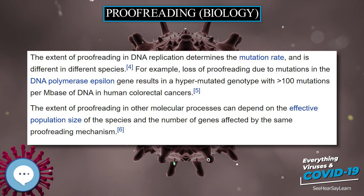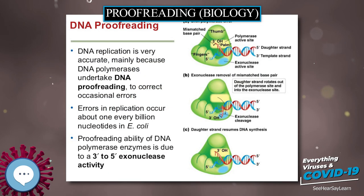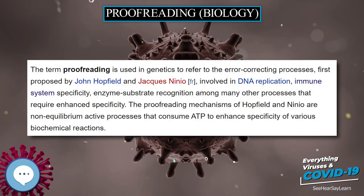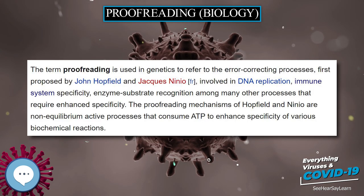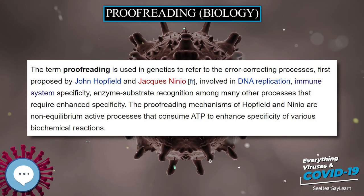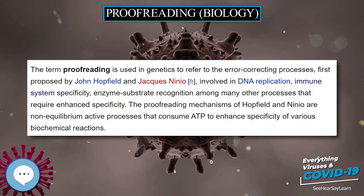The extent of proofreading in other molecular processes can depend on the effective population size of the species and the number of genes affected by the same proofreading mechanism.